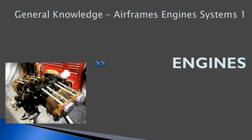Hello, everyone. Welcome back to prepilotgroundschool.ca. This is the first lesson in general knowledge, airframes, engines, and systems. We're going to be talking about aviation engines. In case you're looking at this picture and thinking it looks like an old engine — something out of a Volkswagen from around 1950 — you'd be correct. There's actually not much separating a modern aircraft engine from an air-cooled carbureted engine such as the original Volkswagen engines that were in the vans and in the Beetles. So let's get started.